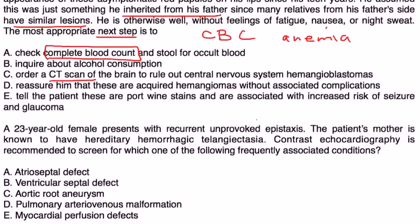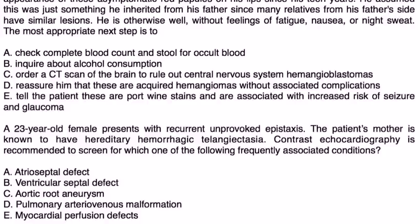And finally, twenty-three-year-old female presents with recurrent unprovoked epistaxis. The patient's mother is known to have hereditary hemorrhagic telangiectasia. Contrast echo is recommended to screen for which of the following frequently associated conditions. So they're asking, in this disorder, this syndrome, what is some serious complication? And choice D, the pulmonary arteriovenous malformation. And that can be detected by doing an echocardiogram.